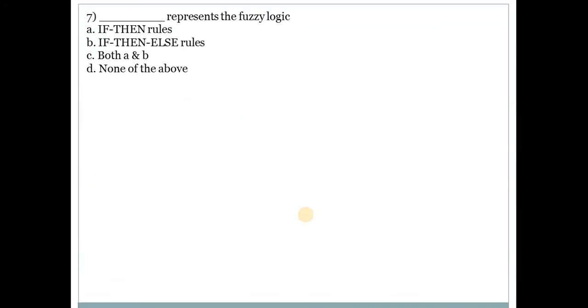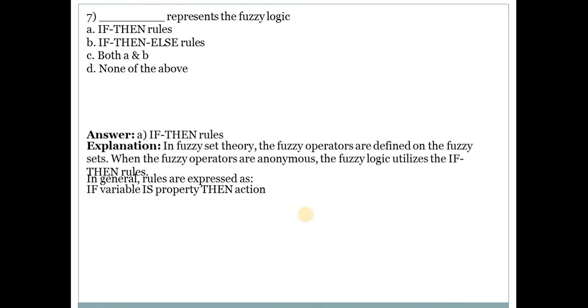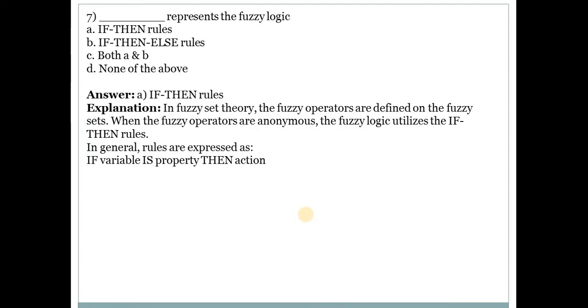Next question is: Dash represents the fuzzy logic. Answer is A, IF-THEN rules. So in fuzzy set theory, the fuzzy operators are defined on the fuzzy sets.